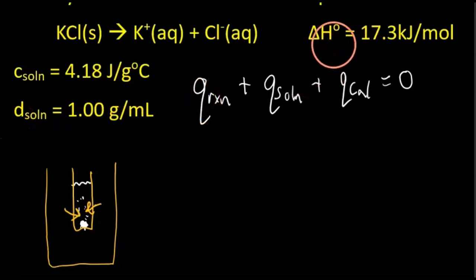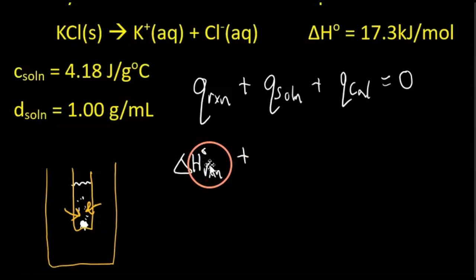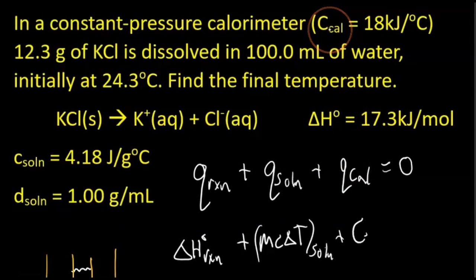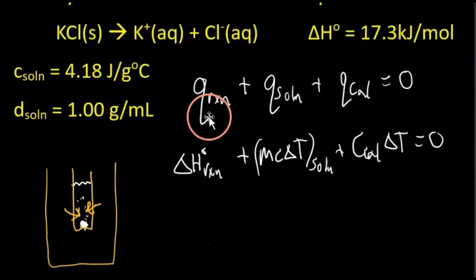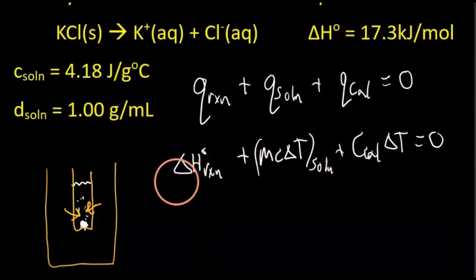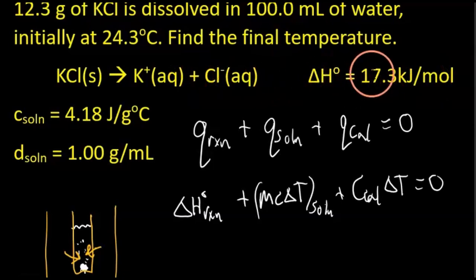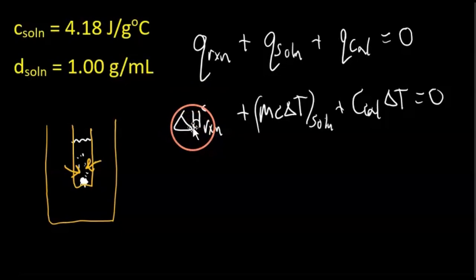The heat of the reaction is the enthalpy change of the reaction. The heat of the solution uses MC delta T — the MCAT equation. The heat of the calorimeter is C_cal times delta T, all equaling zero. Now, the given enthalpy change is 17.3 kilojoules per mole — that's per mole, but we have 12.3 grams of KCl. We need to convert: we want to know the heat for 12.3 grams, not for one mole.